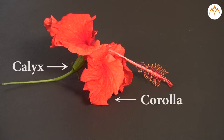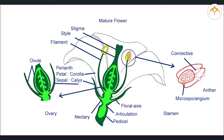Out of these, calyx and corolla are protective in function and do not participate in the reproductive process. Hence, they are called non-essential whorls. Androecium and gynoecium produce gametes during reproduction. Therefore, they are called essential whorls.